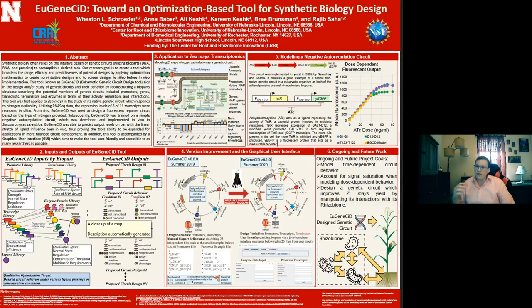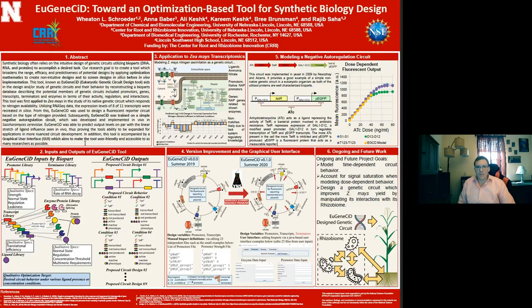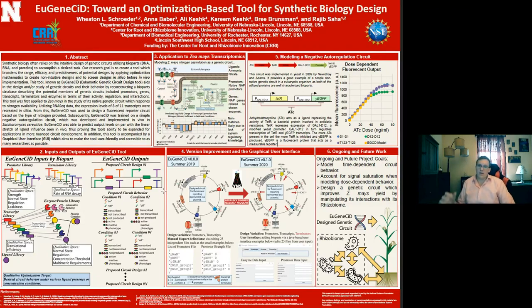What EugeneSid does is it uses an optimization algorithm in order to try to put these bioparts together in such a manner that it will accomplish a task that you specify. Its output will look something like sets of promoter, transcript, and terminator pairs which, when put together in a genetic circuit, will accomplish the desired task.